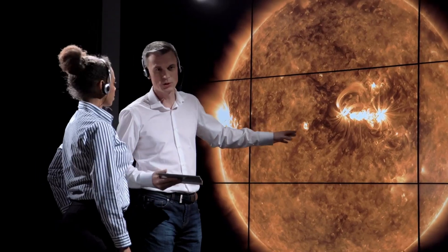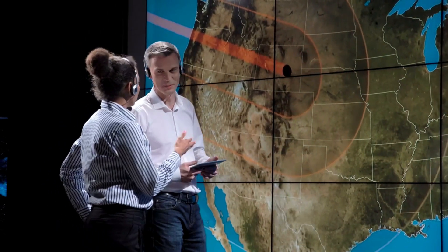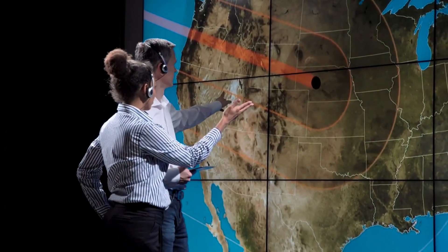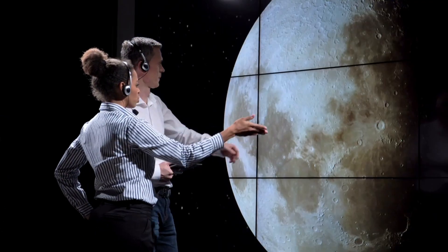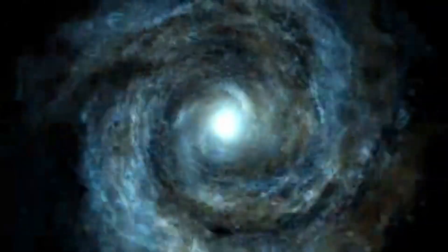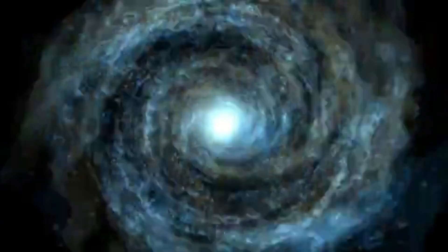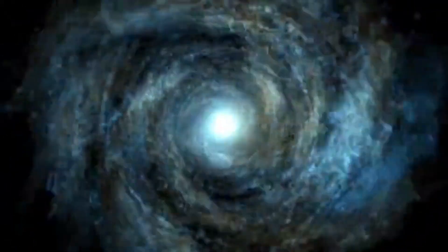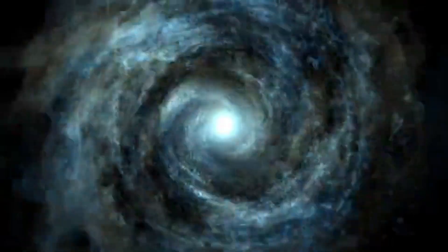Our nearest star, the Sun, has a diameter of about 1.4 million kilometers, dwarfing Earth in comparison. Stars come in a wide range of sizes, from the tiny red dwarfs to the massive blue giants, each contributing to the vast tapestry of the cosmos.